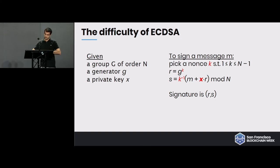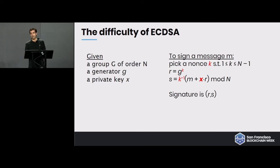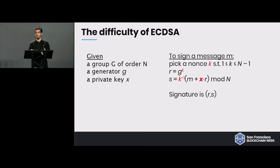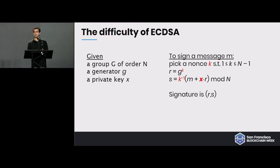This is the only mathematical slide I'll give today — everything else will be very high level. In ECDSA you have a group G of order n, a generator g, and a private key x chosen in the order of the group. To sign a message you choose a one-time-use private key called the nonce, k, where k is between 1 and n minus 1. You compute r, which is g to the k (you exponentiate the generator with the nonce), and s, which is k-inverse times (m plus x·r) mod n. The signature is (r, s).